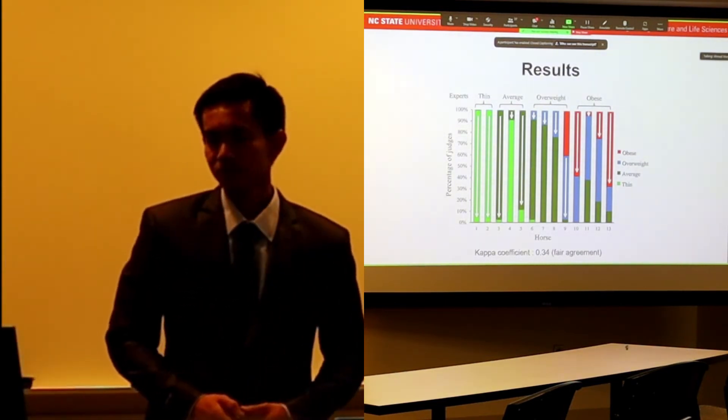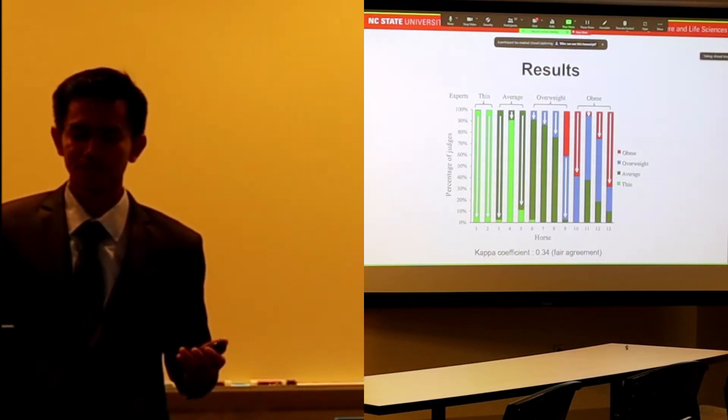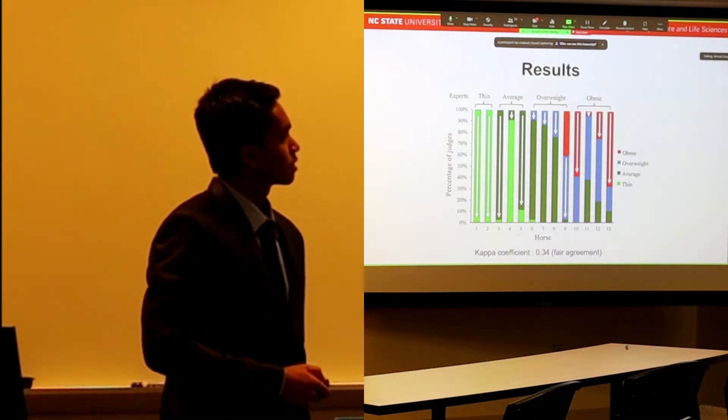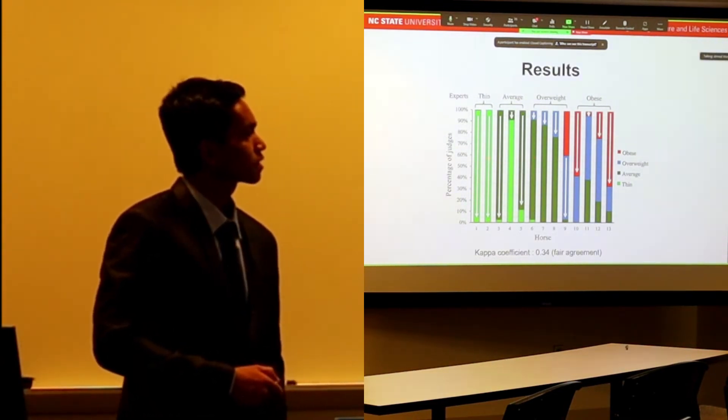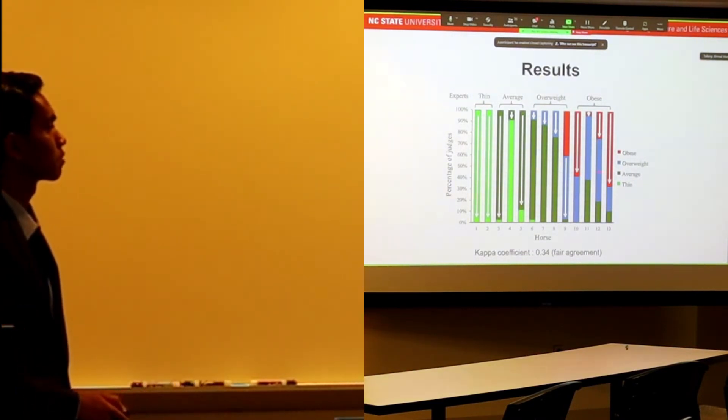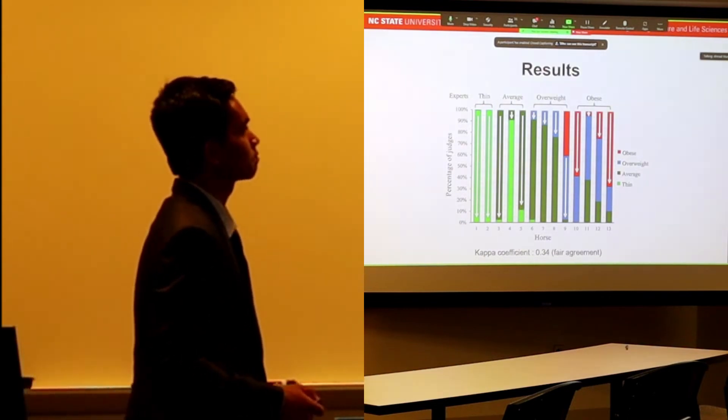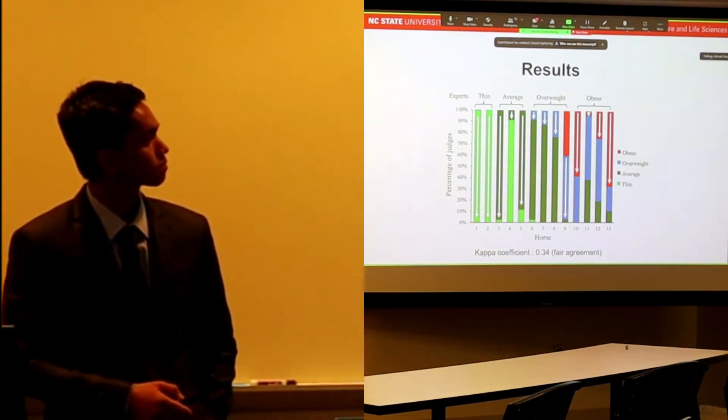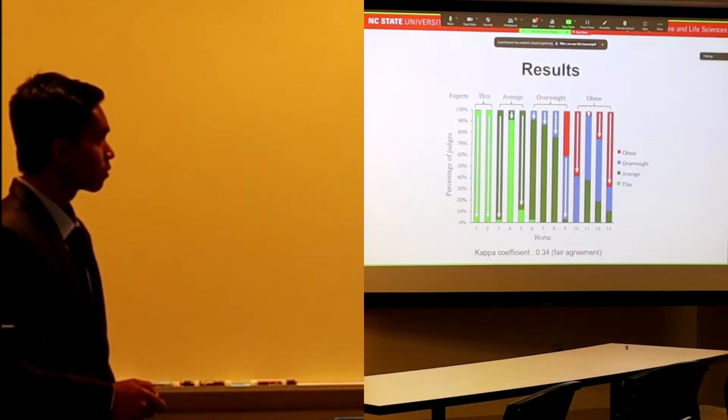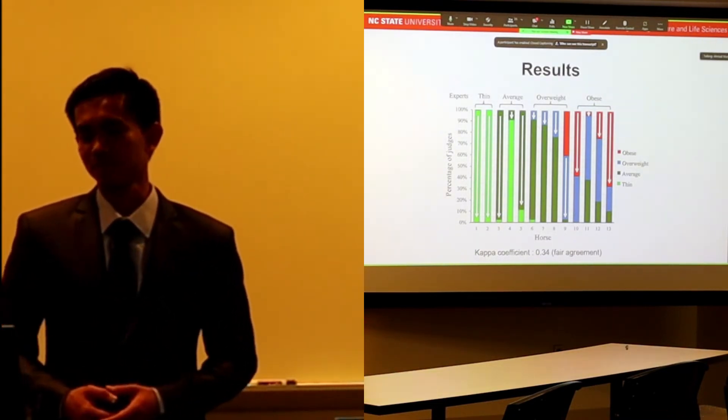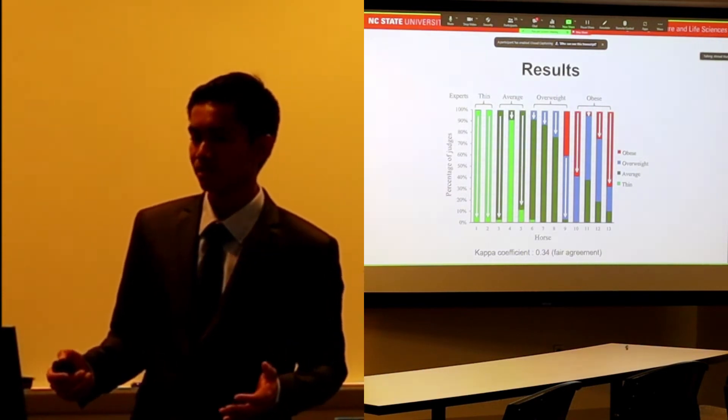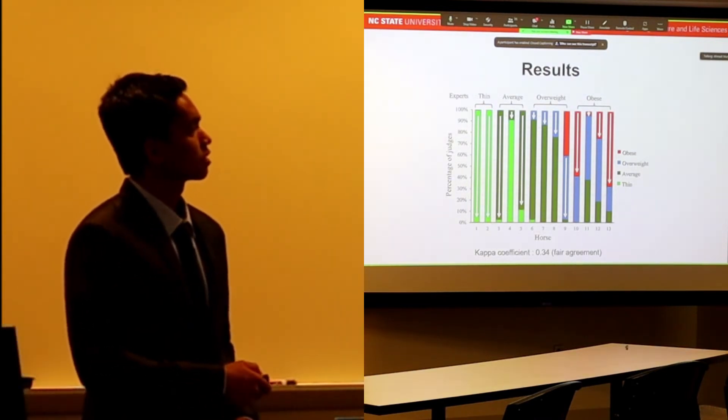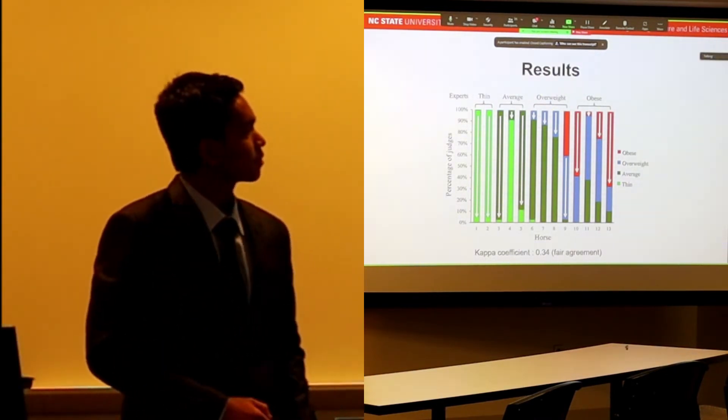Moving on to the opinion of judges versus experts. Different colors represent body condition - whether obese or overweight, average, and thin. The white arrows represent the agreement between them. The longer the white arrows, the more judges agree with the experts' opinions. In thin horses, almost all judges agreed with the experts.